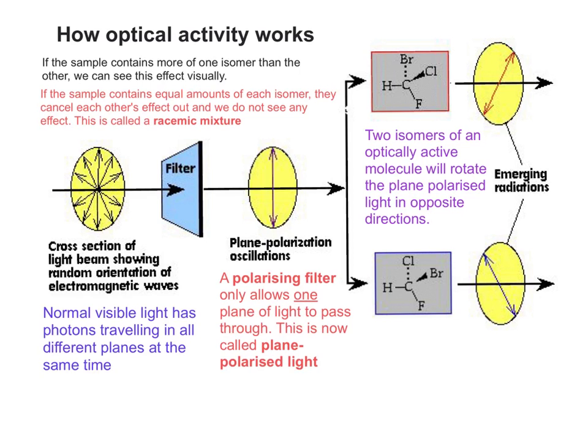If the sample we're using happens to contain more of one isomer than the other, we can see this effect visually. However, if the sample contains equal amounts, they cancel each other's effect out and we don't see any effect with our naked eyes. This type of mixture would be called a racemic mixture, which would have 50-50 amounts of each.